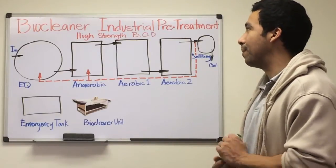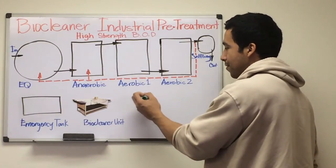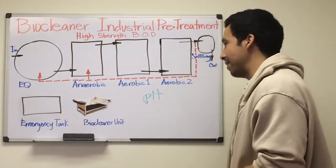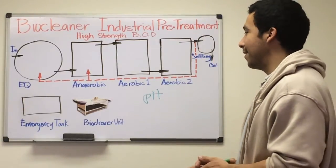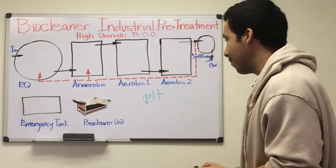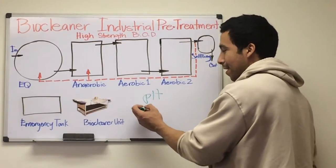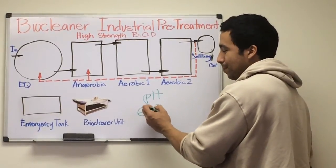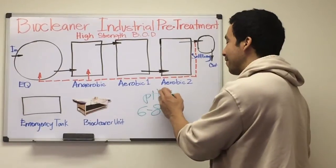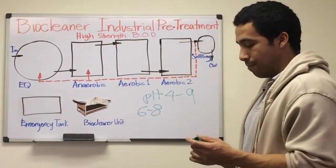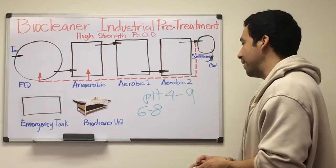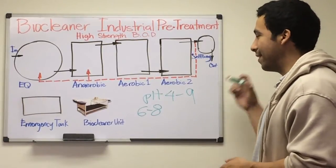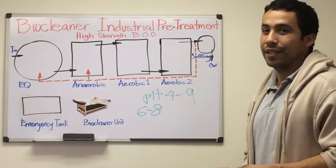One variable is pH. Usually pH will vary depending on the industrial process. For our system, our microorganisms operate at an optimal pH of 6 to 8. However, we can survive from 4 to 9. If it's below 4 or above 9, you might consider having a neutralization tank where you can either increase or decrease the pH.